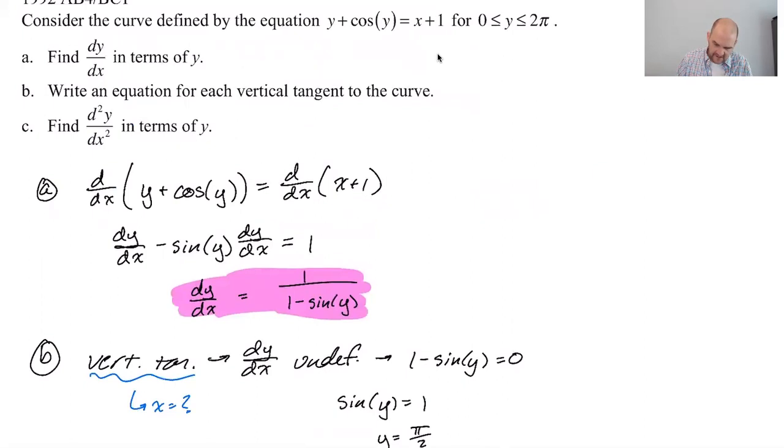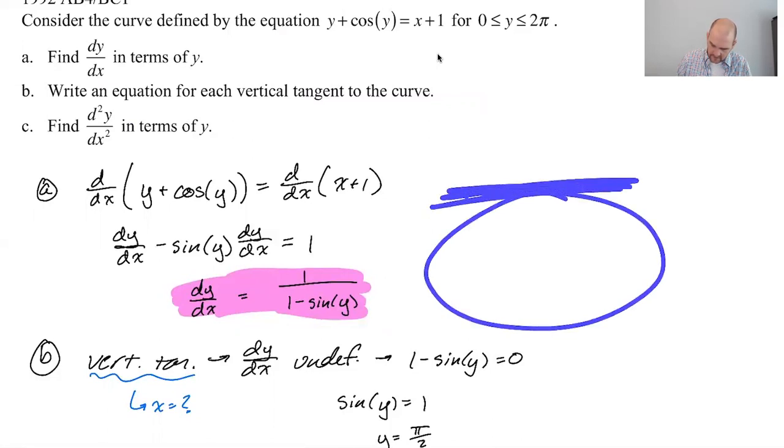And then it does say for each, which is a little unnerving. But we did it for each of them. It's just that there's only one. So each sort of feels like it implies more than one, but I don't think there is more than one because there's only one place on the unit circle where sine is equal to 1. It's at π/2.